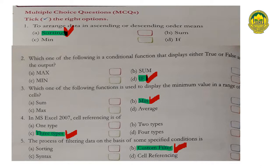Number four: in MS Excel 2007, cell referencing is of (a) one type (b) two types (c) three types (d) four types. Answer: (b) two types. Number five: the process of filtering data on the basis of some specified condition is (a) sorting (b) custom filter (c) syntax (d) cell referencing. Answer: (b) custom filter is the right option.